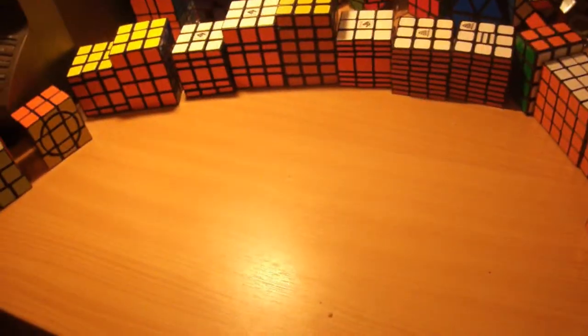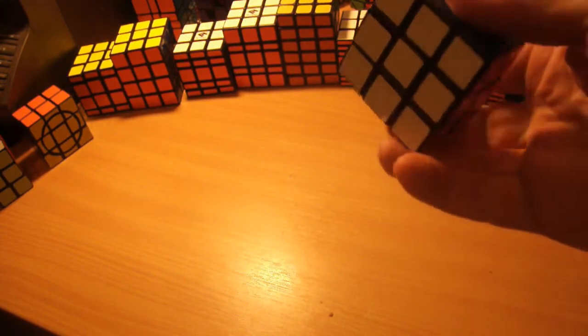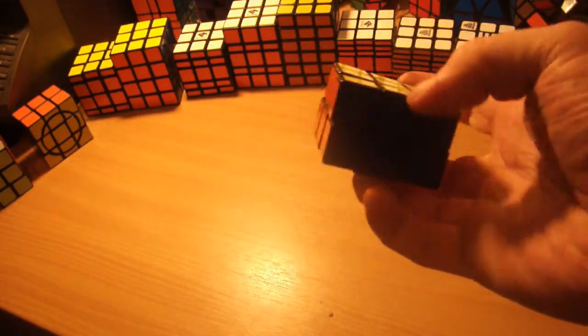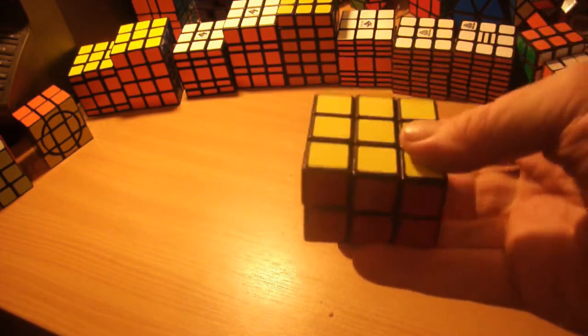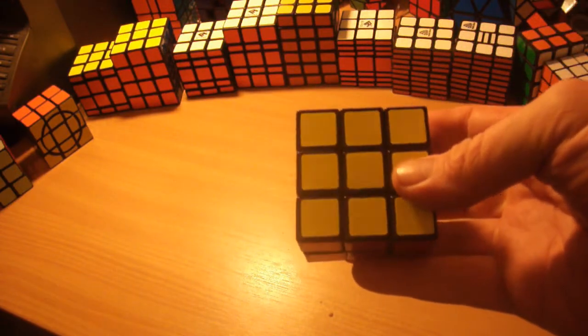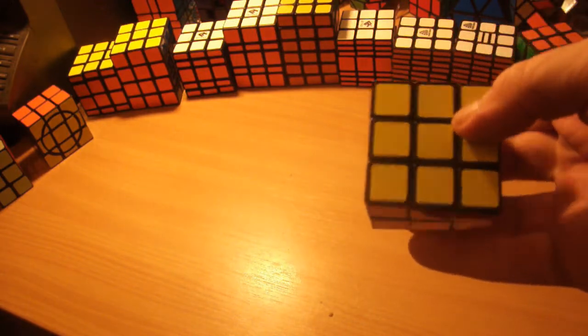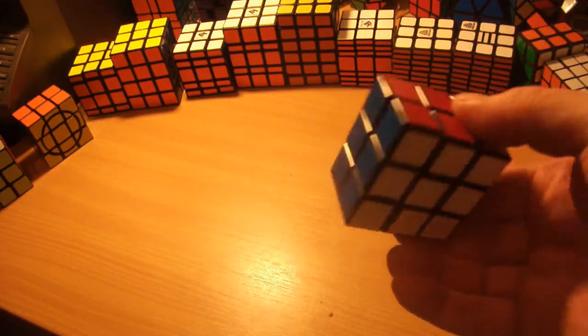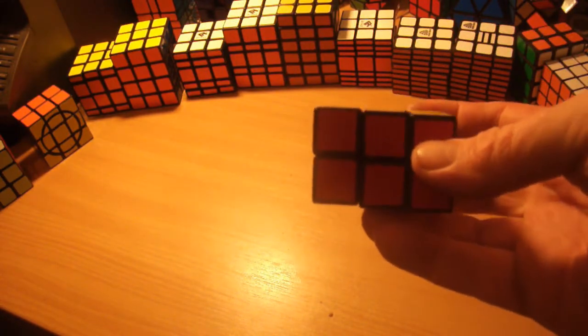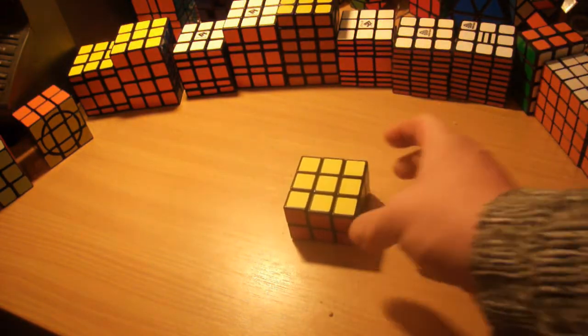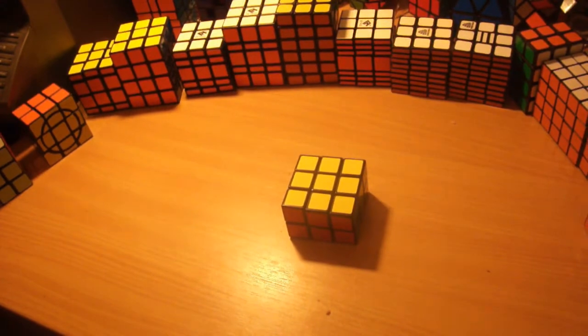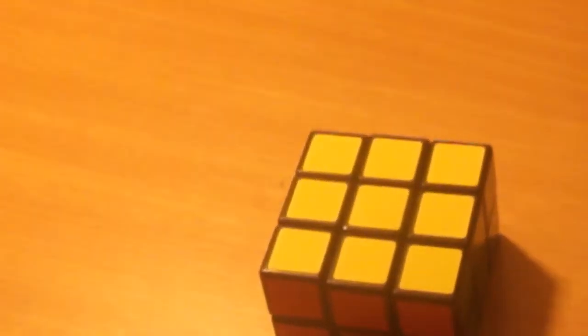Then you need to start out simply with this. This is the 3x3x2, often also called the domino cube, because when the first ones were made, they had domino numbers on the top. These days you can generally find them with colored stickers like this. This is what you need to do to be able to solve all of these other cuboids, the humble little domino cube.